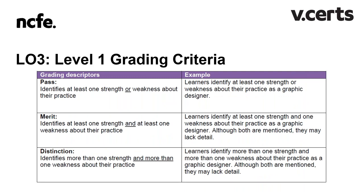Here we can see the Level 1 criteria — it's quantified so usually a little bit easier to interpret. For a pass it's at least one strength or one weakness about their practice. For a merit it's at least one strength and at least one weakness — both elements. For a distinction it's more than one strength and more than one weakness — still 'identify', so not looking for a great deal of detail; quite basic evidence like lists or bullet points is acceptable.